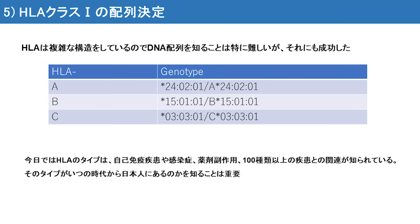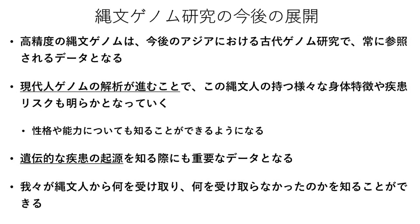最後にHLAに関する話です。HLAは非常に多形的であることが知られていますが、驚いたことにこの縄文人・船泊23号では父親・母親由来の配列が両方とも同じ型であることが分かりました。集団サイズが非常に小さいことが先ほどの説明でも明らかとなりましたが、その結果を反映してHLAのタイプも全ての領域で共通して同じ配列が示されました。このようなHLAのタイプは自己免疫疾患や感染症・薬剤への副作用など100種類以上の疾患と関連することが知られています。